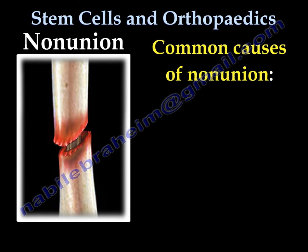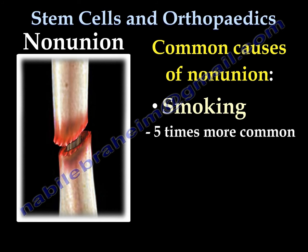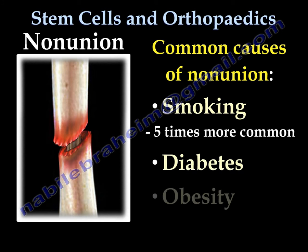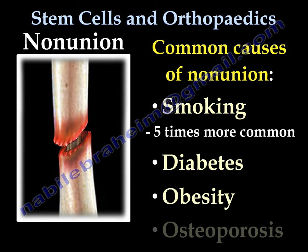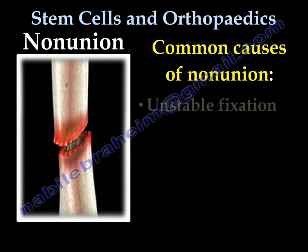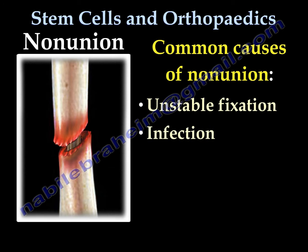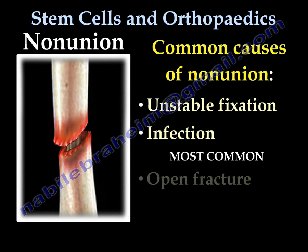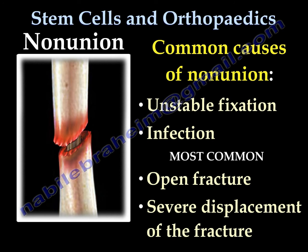Common causes of nonunion include smoking (five times more common), diabetes, obesity, and osteoporosis. Also unstable fixation and infection, but the most common is open fracture and severe displacement of the fracture.